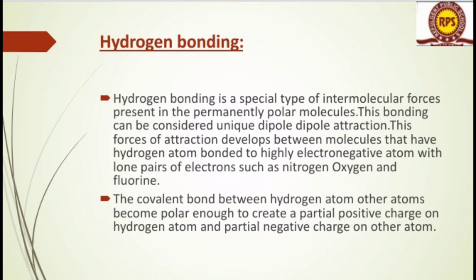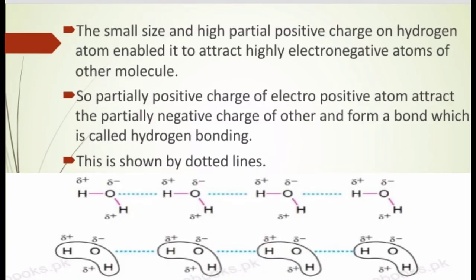The covalent bond between a hydrogen atom and another atom becomes polar enough to create a partial positive charge on hydrogen. جب hydrogen کسی highly electronegative atom کے ساتھ attach ہوگا تو hydrogen پر positive character آجائے گا اور یہ partial positive charge carry کر لے گا۔ The small size and high partial positive charge on hydrogen enable it to attract the highly electronegative atom of the adjacent molecule, forming a bond called hydrogen bonding, shown by dotted lines.